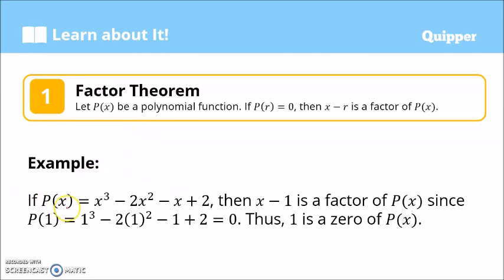Example of the factor theorem: if p of x equals x cubed minus 2x squared minus x plus 2, we can say that x minus 1 is a factor of p of x because p of 1 — substituting 1 for all x — gives 1 cubed minus 2 times 1 squared minus 1 plus 2, and the answer is 0. So x minus 1 is a factor of p of x. Thus, 1 is a zero of p of x, 1 is an x-intercept of the graph, and 1 is a solution to p of x equals 0.